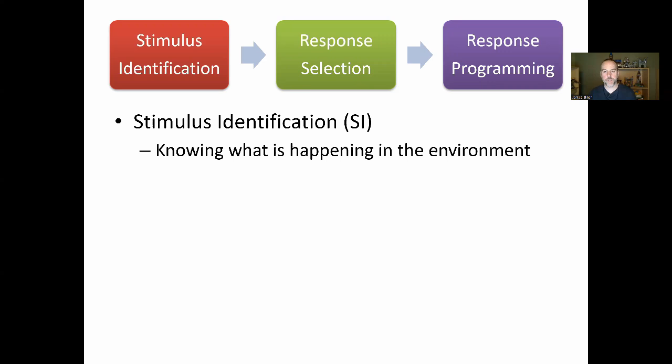Stimulus identification — sometimes abbreviated as SI — is simply knowing what is happening in the environment, and that can also include your body. Think of those nine sources of stimuli coming in: our brain has to identify what we see, what we hear, what we feel, where our body is, what's going on in us and in the world. That is stimulus identification.